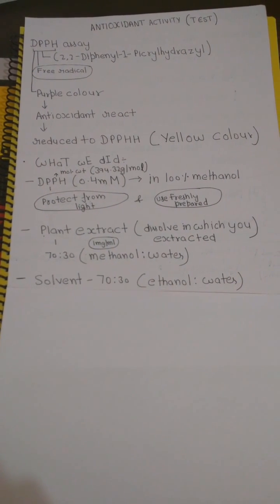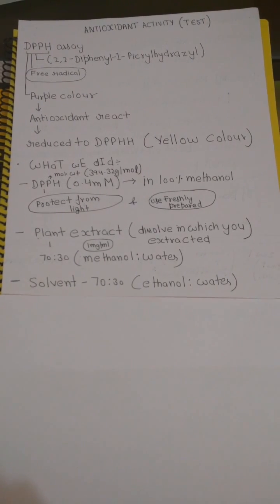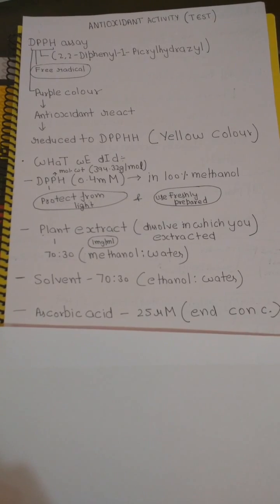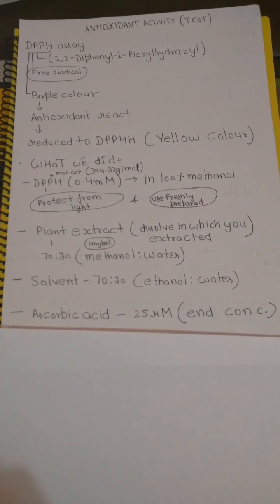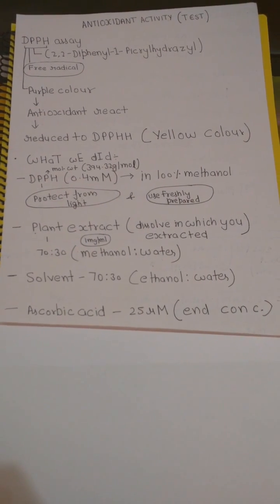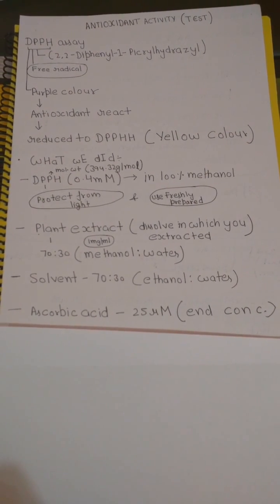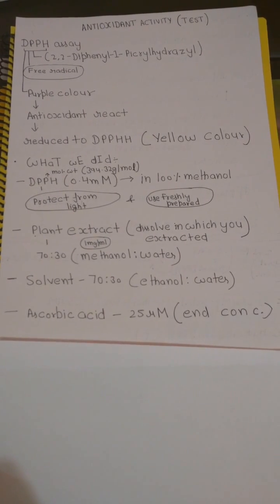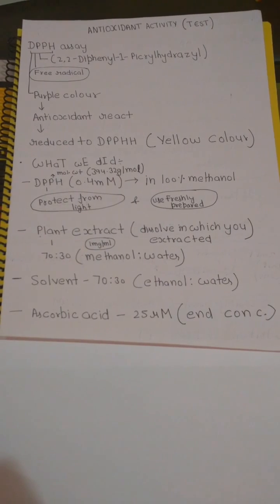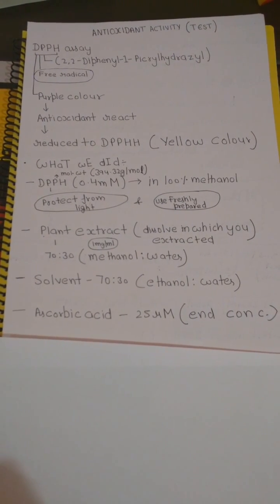We extracted our plant extract in methanol, that's why we dissolved it in methanol. The third thing that you will need is solvent, and in this case we used 70 to 30 ratio of ethanol and water. The last thing was ascorbic acid. We use it as a reference because ascorbic acid has very high antioxidant activity so that we can compare it to our plant extract. Its end concentration was 25 micromolar.